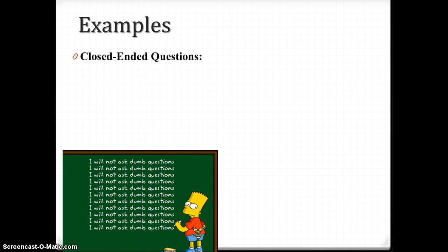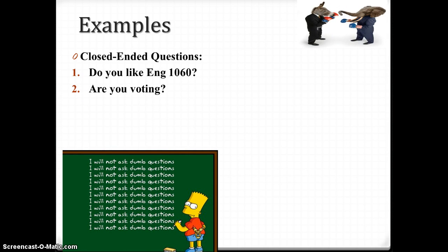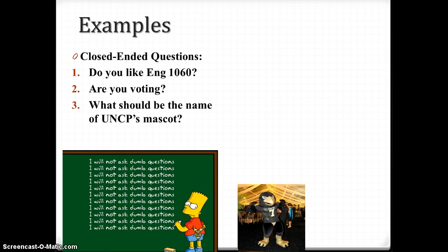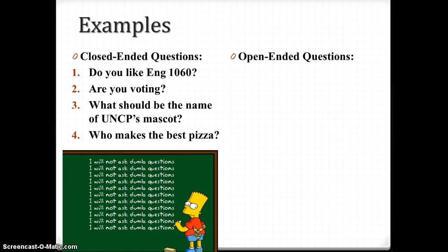Let's look at the differences between closed-ended and open-ended questions. For example, if I said, do you like English 1060? Well, you could just say yes or no. Are you voting? Again, there's not really a complex answer there. What should the name of UNCP's mascot be? Notice that even though it's a what question, it's still basically a one-word answer — still a closed-ended question. What and where can often be a one-word answer. Who makes the best pizza? Well, you could just say Pizza Hut or Papa John's. Closed-ended questions don't really get you to a point of getting really good responses.